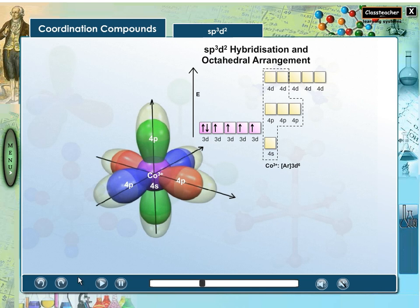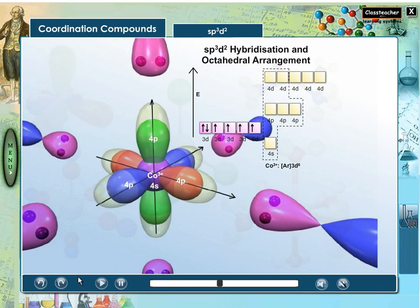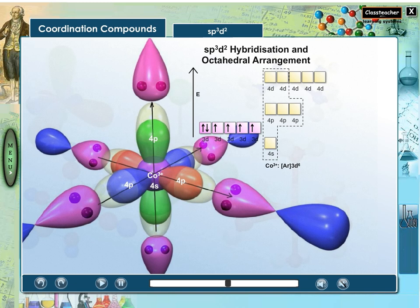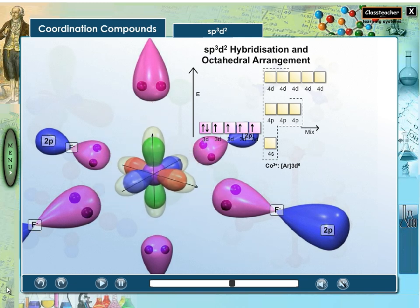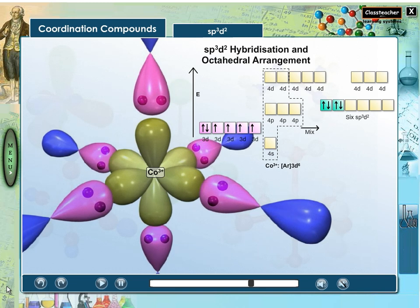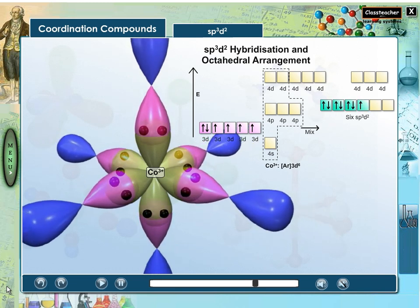In this complex, cobalt is in plus-3 oxidation state, and its 6sp3d-2 hybrid orbitals point towards the corner of the octahedron. 2p orbitals of fluoride ions overlap with them to form 6 cobalt-fluoride bonds. Each fluoride ion donates a pair of electrons and forms a cobalt-fluoride bond.